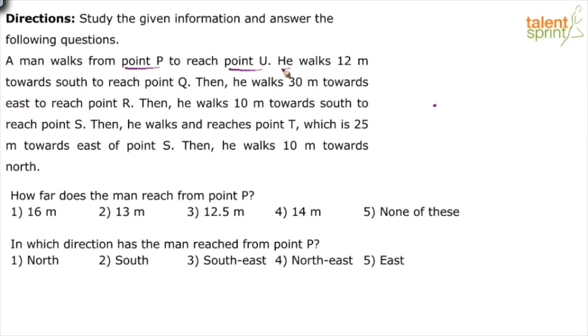So we are at point P. This is point P. From point P, he walks 12 meters south to reach point U. So let's assume this is point P. He has walked 12 meters south to reach point Q. So this is point Q.